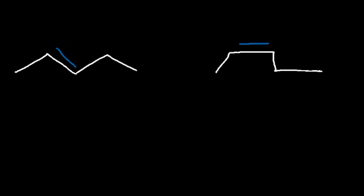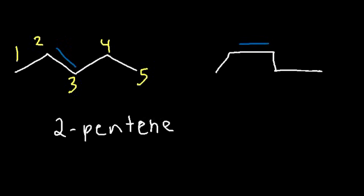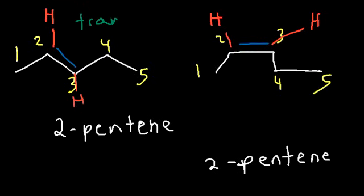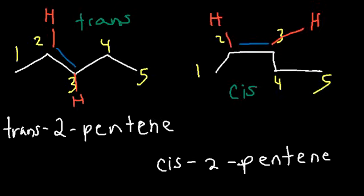What is the name of these two alkenes? We talked about this one earlier — we can see a 5-carbon chain with a double bond at 2, so it's called 2-pentene. However, the one on the right is also called 2-pentene. So what is the difference between these two molecules? Double bonds are not free to rotate, so these are actually two different molecules. On the left, the hydrogens connected to the double bond are opposite to each other — that is the trans isomer. On the right, they're on the same side — that is the cis isomer. So this is trans-2-pentene and this is cis-2-pentene.